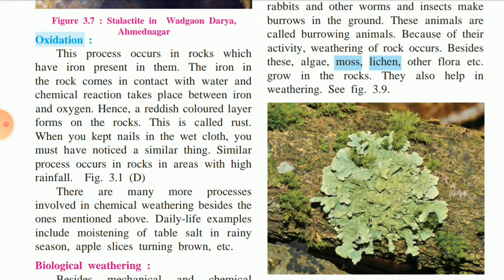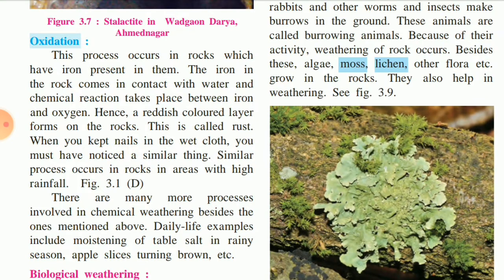You must be remembering that experiment. Now let us study oxidation from that background. This process occurs in rocks which have iron present in them. Many rocks have a lot of minerals, and the rocks which have more iron present in them undergo oxidation. The iron in the rock comes in contact with water and a chemical reaction takes place between iron and oxygen.